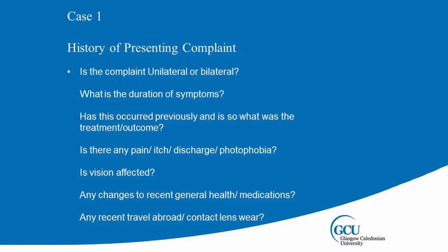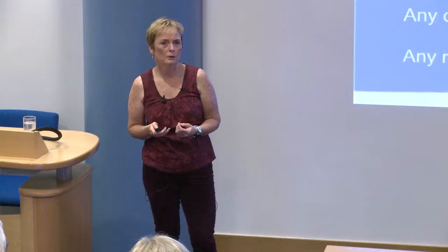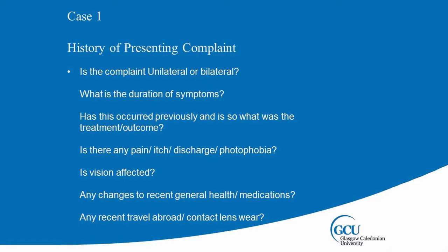Is the complaint unilateral or bilateral? That's a huge one, really — if it's uveitis and it's bilateral, or something granulomatous going on health-wise, that's not a good sign. Always try to find that one out. What are the durations of the symptoms, and do the symptoms tie in with any changes to general health lately? Have they had an upper respiratory tract infection? Is the vision affected?